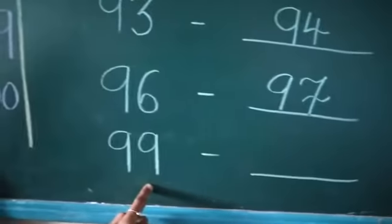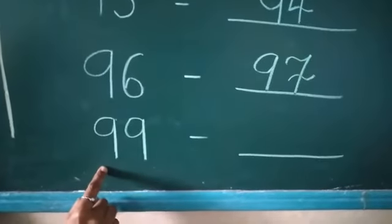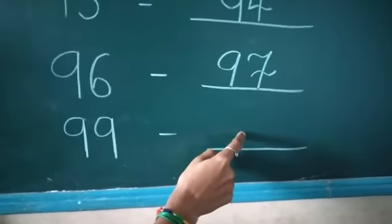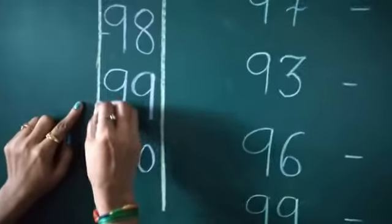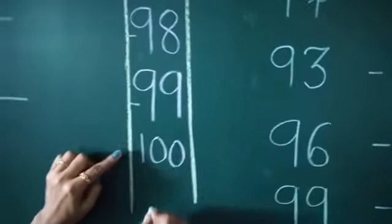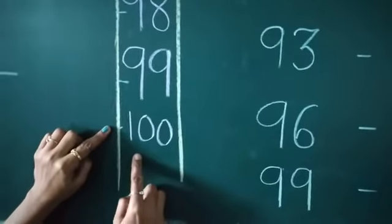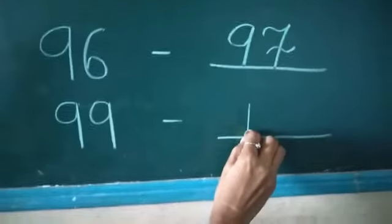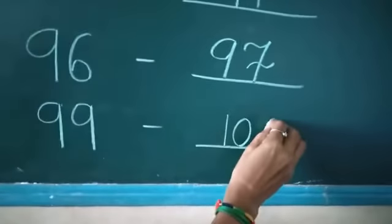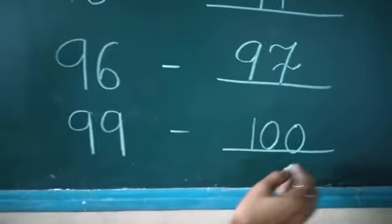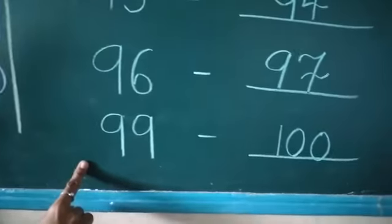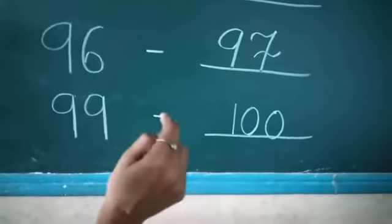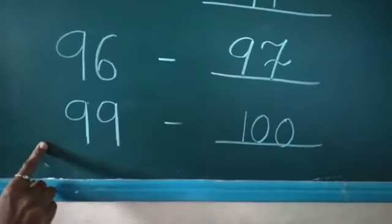Next, number 99. Which number comes after? Look at here — number 99. Which number comes after? 100. So number 100 comes after number 99.